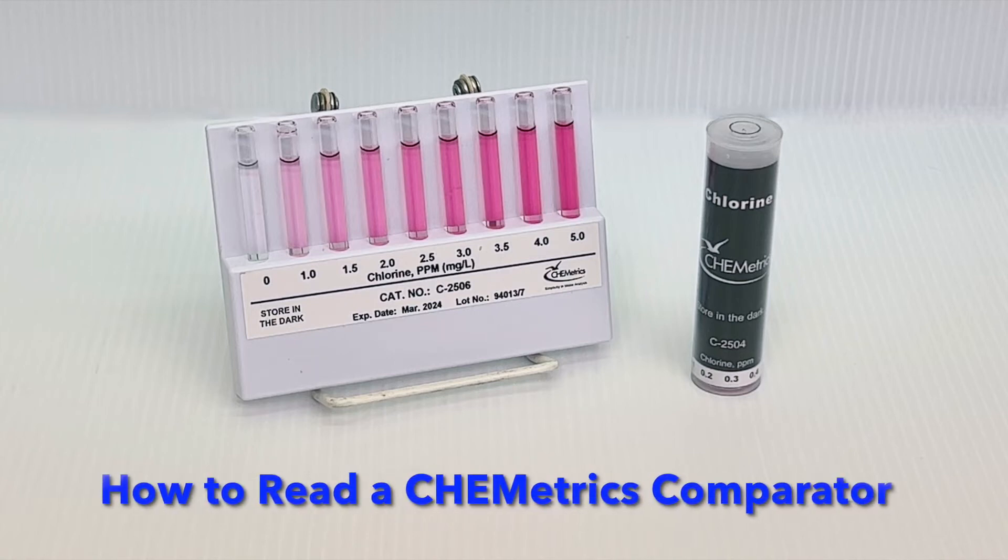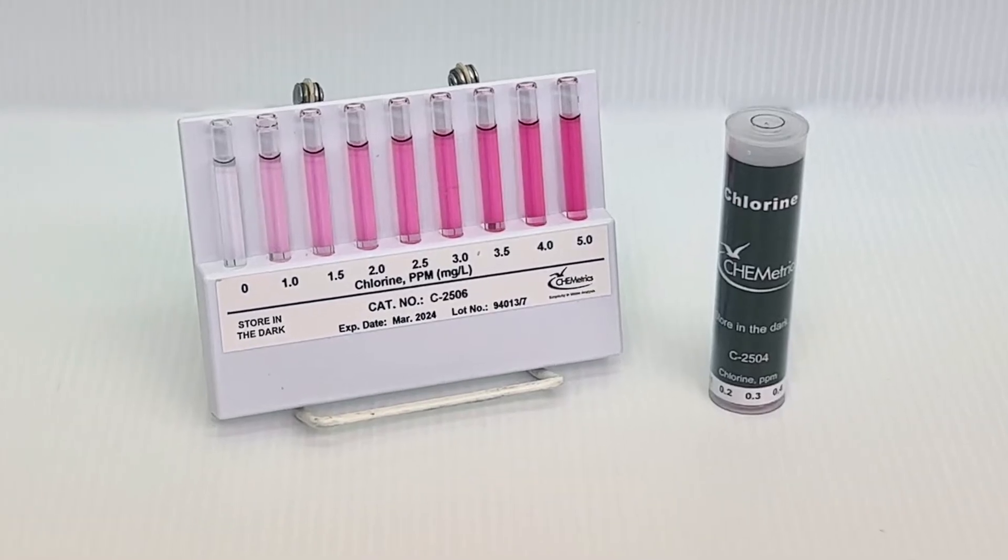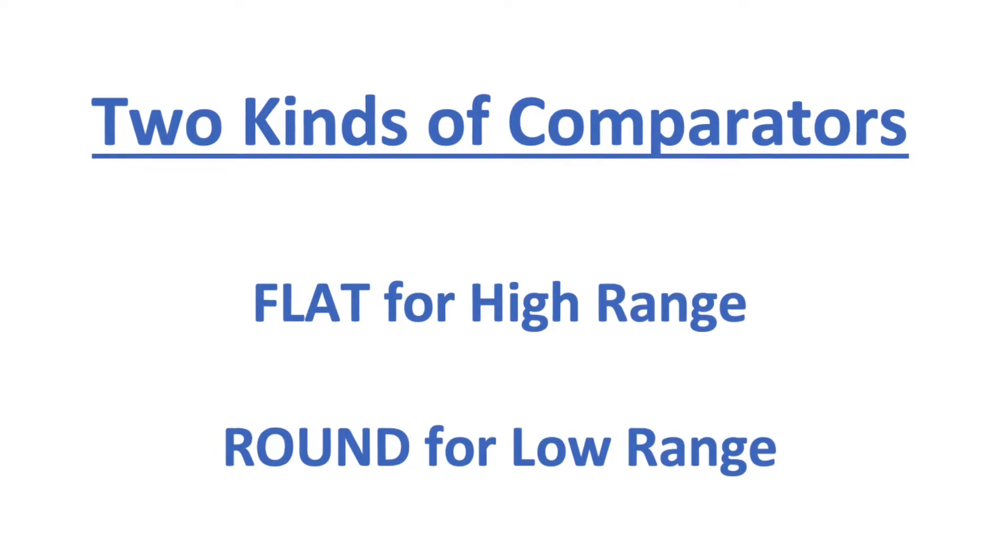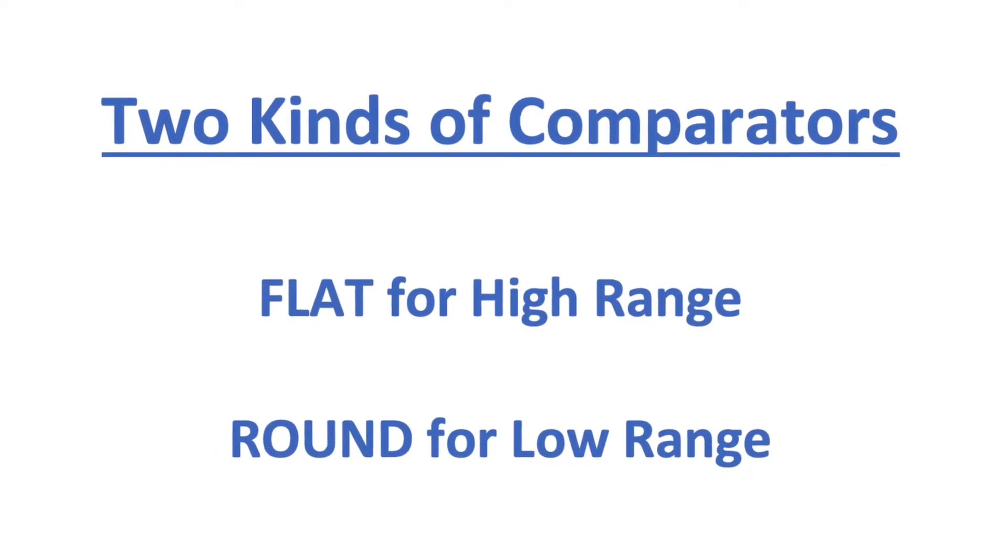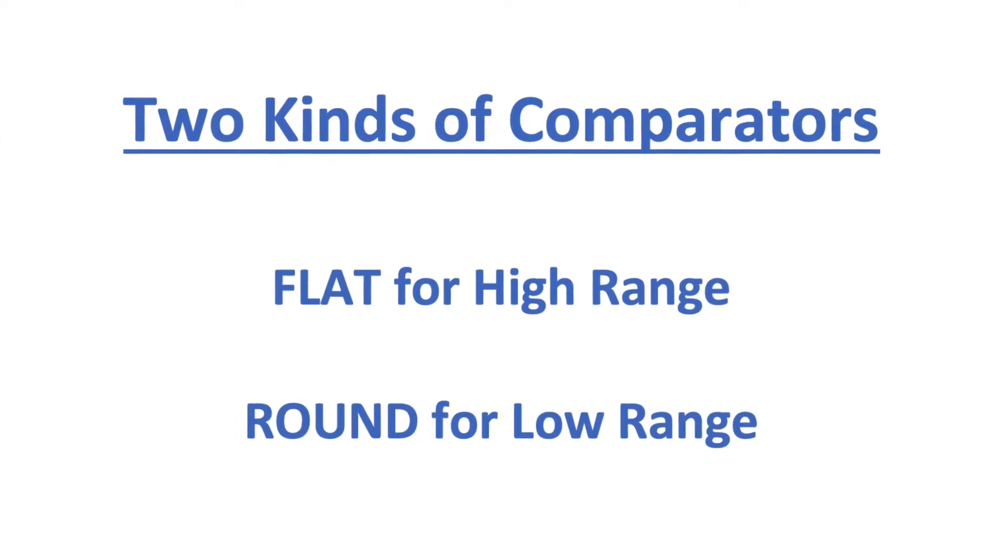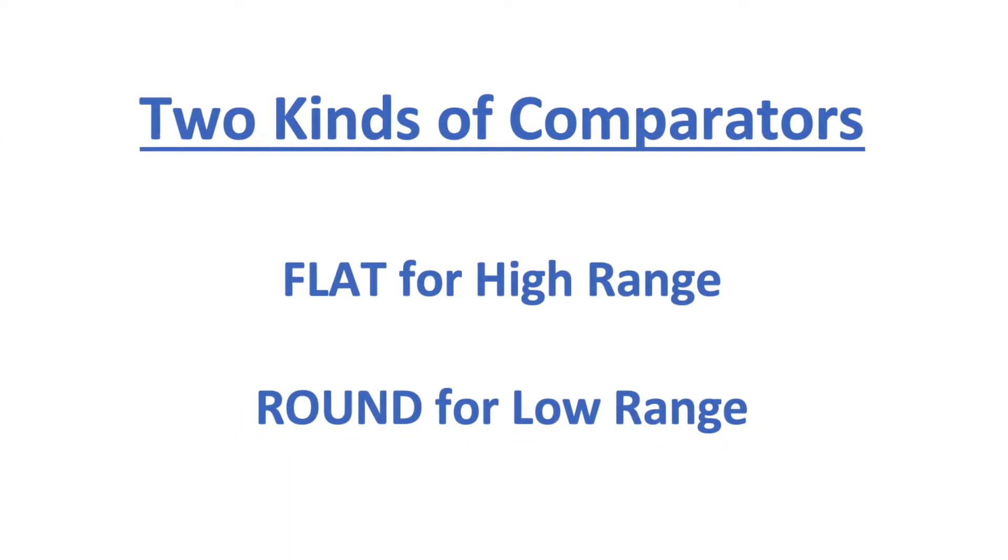How to Read a Cometrix Comparator. A comparator is a set of sealed ampoules that contains color standards made of dye mixtures. Cometrix offers two kinds of comparators: flat comparators with a white background intended for high-range measurements and round cylindrical comparators for low-range measurements.